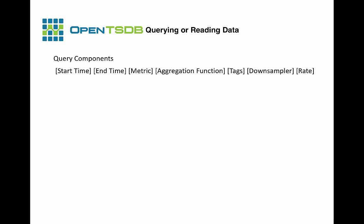For querying and reading data, OpenTSDB offers a number of means to extract data such as CLI tools, HTTP API, and GNU plot graphs. The query component consists of the start time, end time, metric, aggregation function, tags, downsampler, and rate. The aggregation function is a mathematical function used to combine multiple time series, merging two or more data points for a single timestamp into a single value. The downsampler is an optional interval and function to reduce the number of data points returned, so you can extract better information from the graph or pass less data over the connection. The rate is an optional flag to calculate the rate of change for the result.